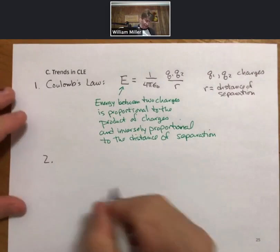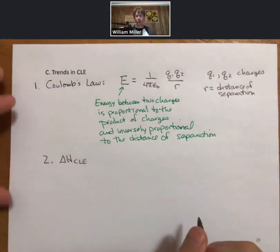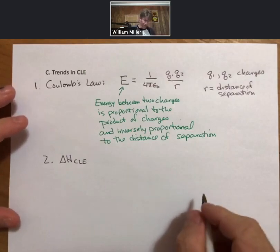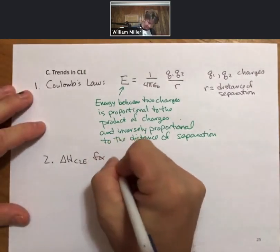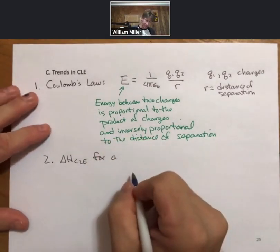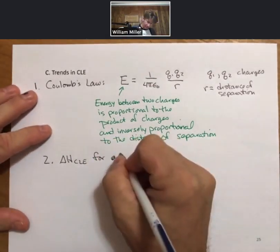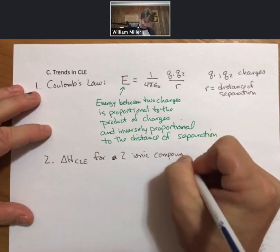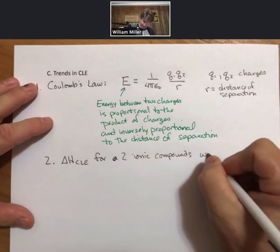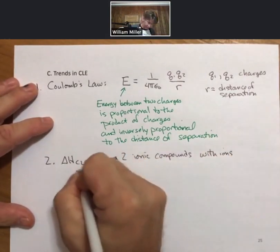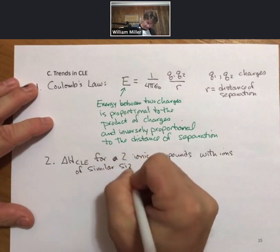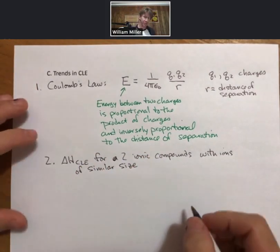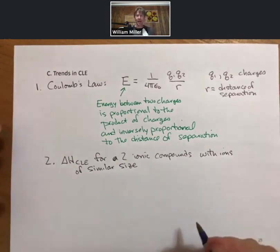So for example, if we now look at delta H crystal lattice energy for two ionic compounds with ions of similar size. And by ions of similar size we mean that they will be close to each other on the periodic table, as we've already discussed sizes of atoms and ions trends in those.